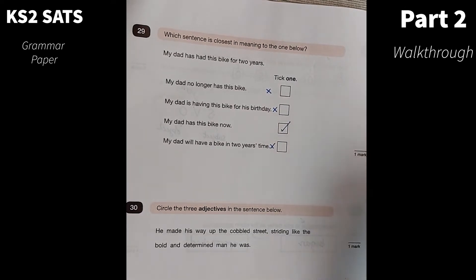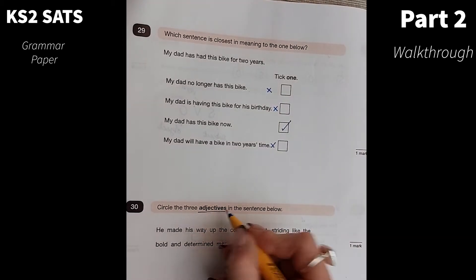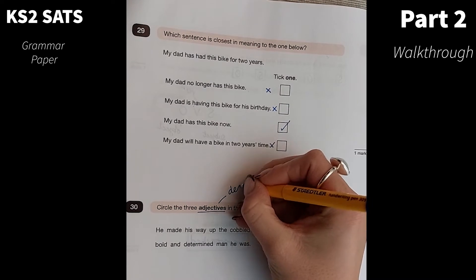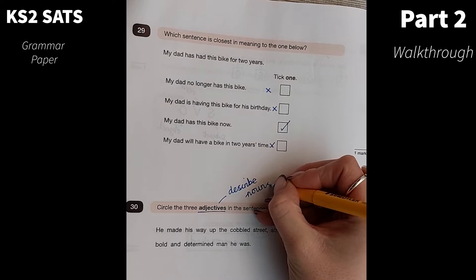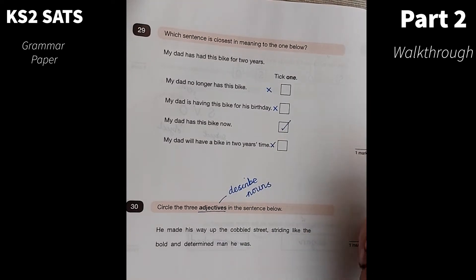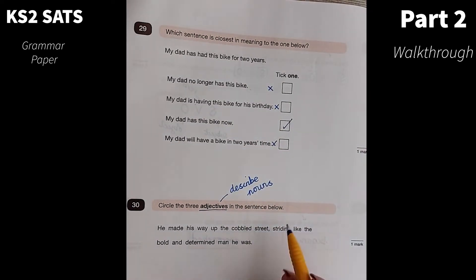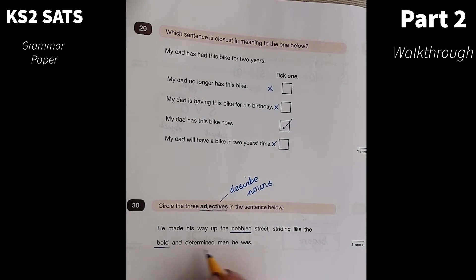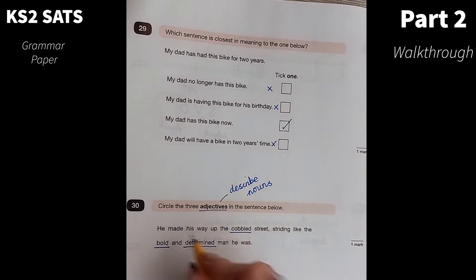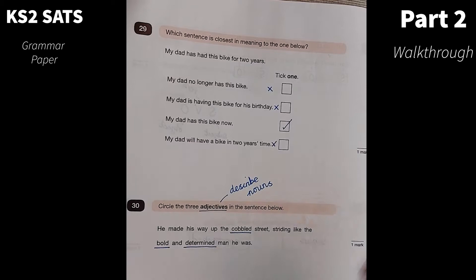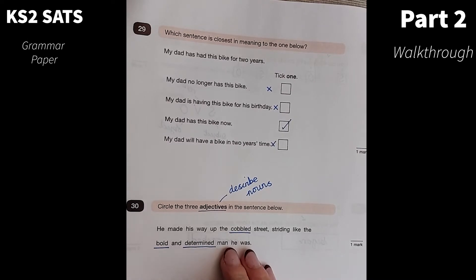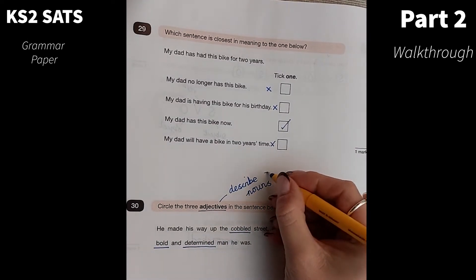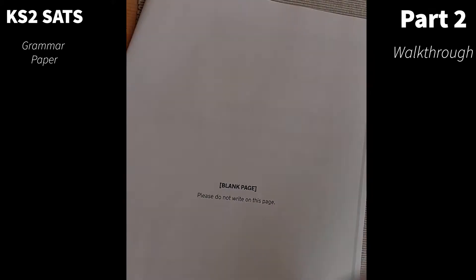Number 30. Circle the three adjectives in the sentence below. I'm looking for adjectives. Adjectives are words which describe nouns. If I look for my nouns, it should help me to find my adjectives. He made his way up the cobbled street. So cobbled is describing the street. Striding like the bold and determined man he was. So I have my three adjectives there. I've seen all kinds of crazy things. People underlining striding man. But it's important to know that adjectives do describe nouns.